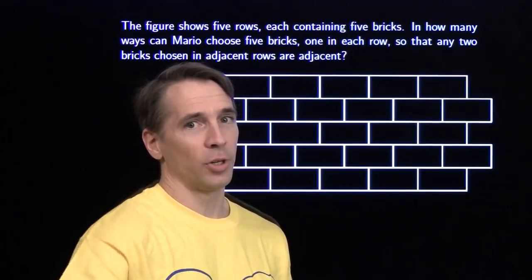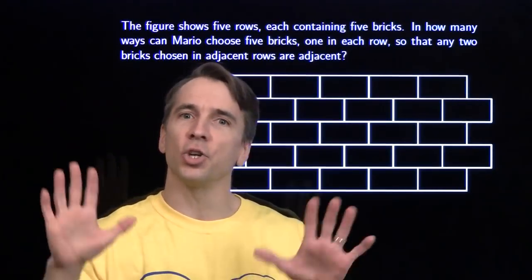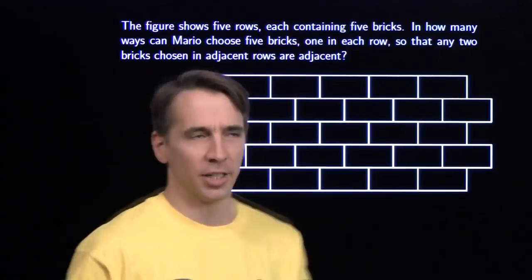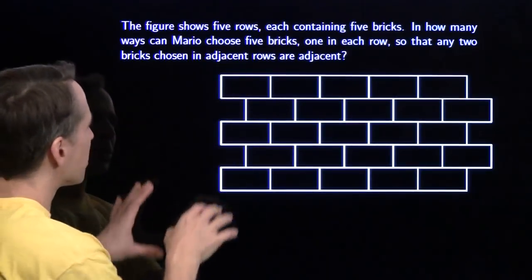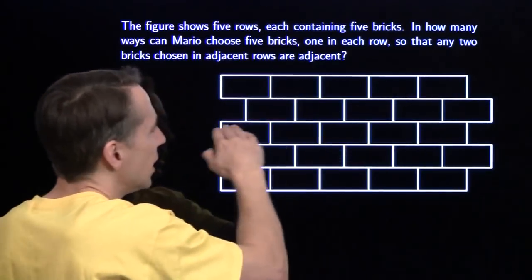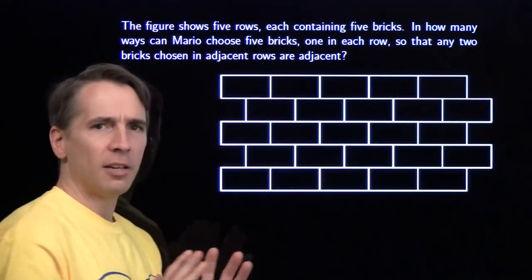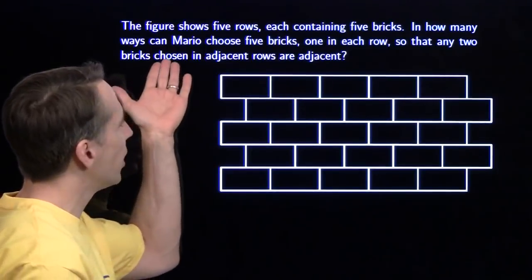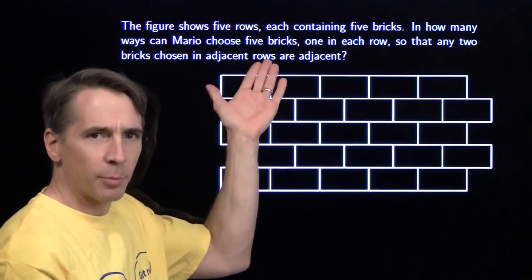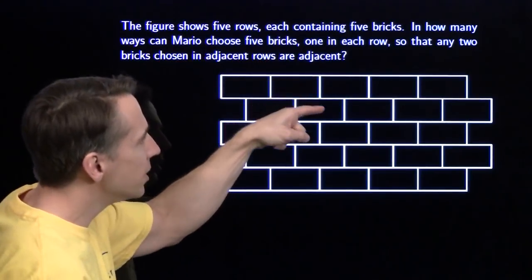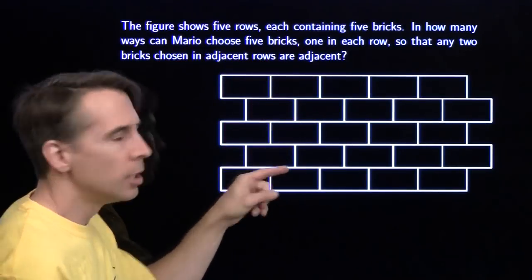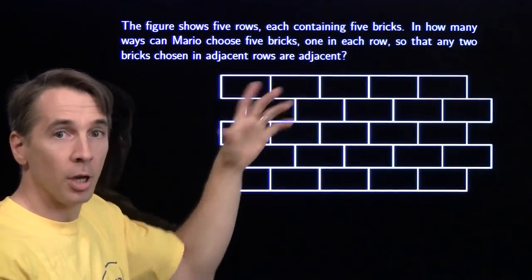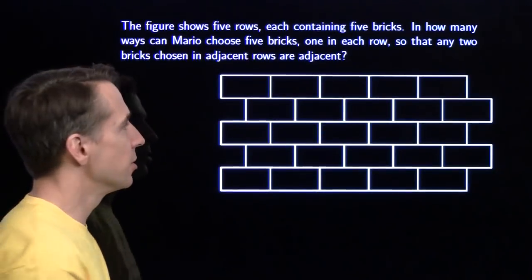I have three counting problems for you this month, and I'm going to show off some of my favorite counting strategies. We're going to start right here. We've got five rows, each containing five bricks, and we want to count the number of ways Mario can choose five bricks, one in each row.